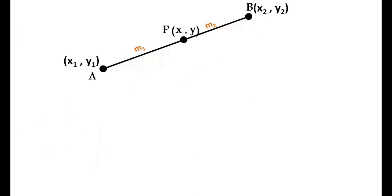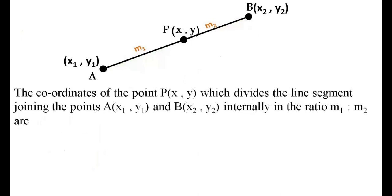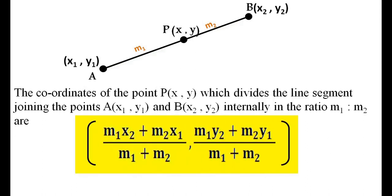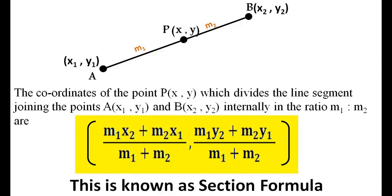So, the coordinates of point P(x, y) which divides the line segment joining points A(x₁, y₁) and B(x₂, y₂) internally in the ratio M₁:M₂ are as shown on the screen. Observe the formula properly. This formula is known as the section formula.